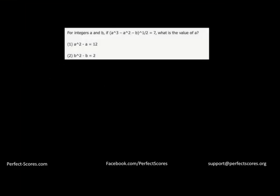The question here is a data sufficiency question. Let's read through the question stem first. It says that A and B are integers, so that's a very important piece of information. The question gives us that square root of A³ - A² - B equals 7, which means that A³ - A² - B equals 49. So this is what we have.